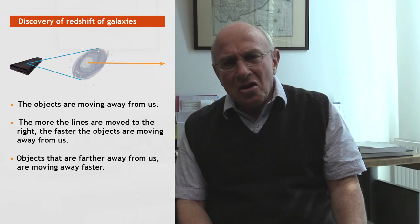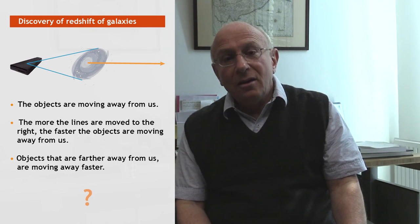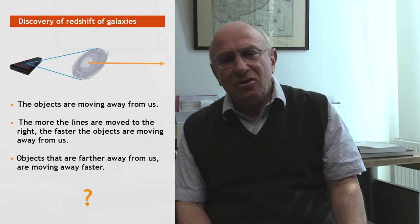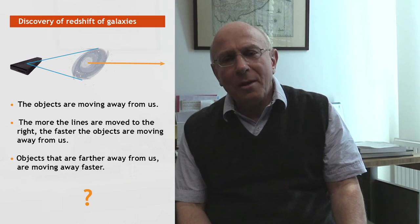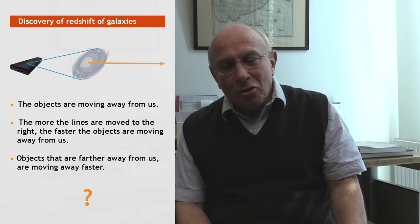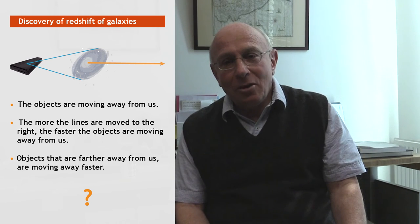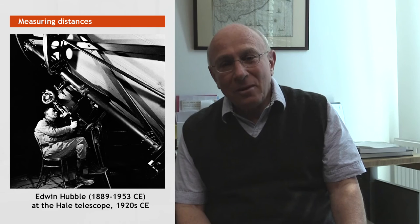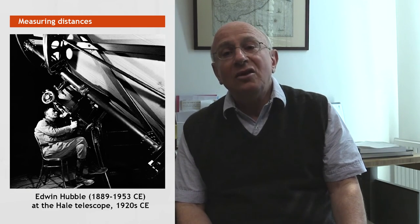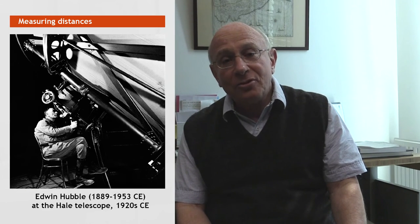It was a totally unexpected observation, and astronomers didn't know how to interpret it. At a certain point, Slipher reported this at an astronomical conference, around 1915 or 1916, and that caused big commotion. There was an astronomer sitting in the back of the audience — it was Edwin Hubble — and after Slipher decided to stop his observations, Hubble decided to continue them.